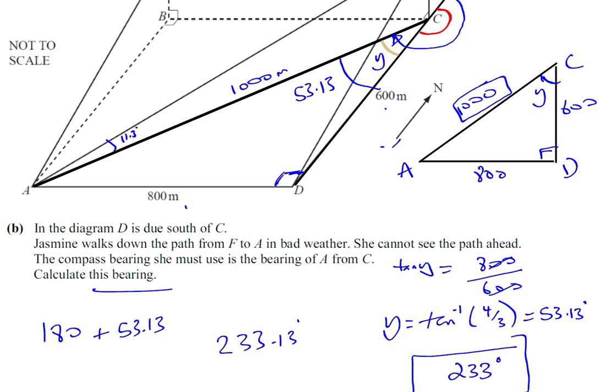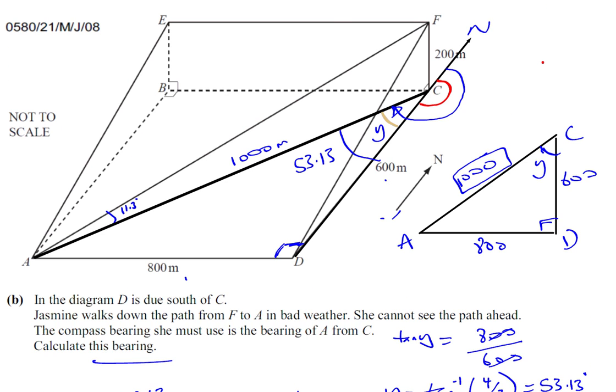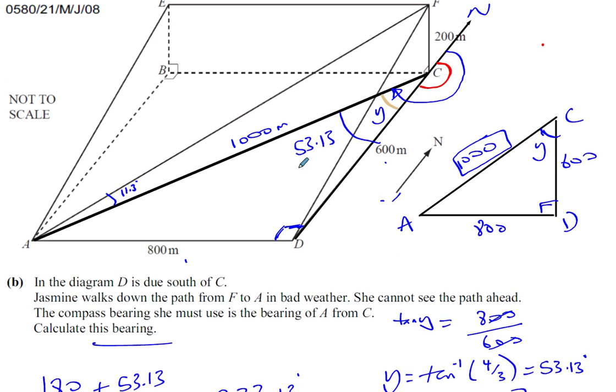So that's the answer to this question. 233 degrees is the bearing of A from C.